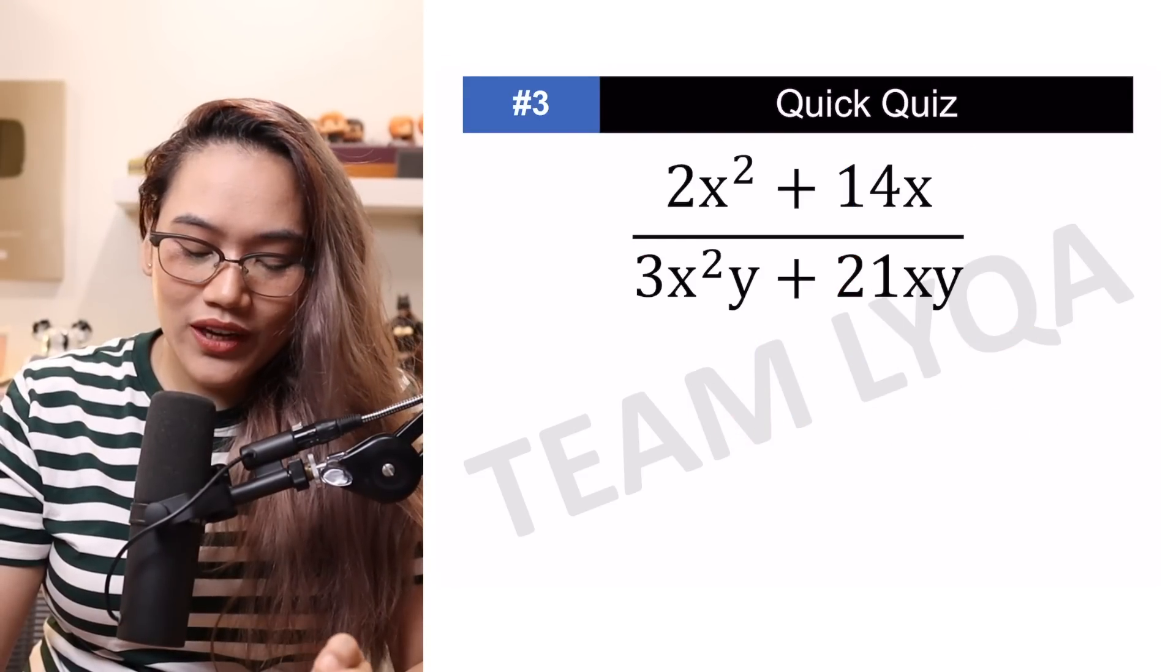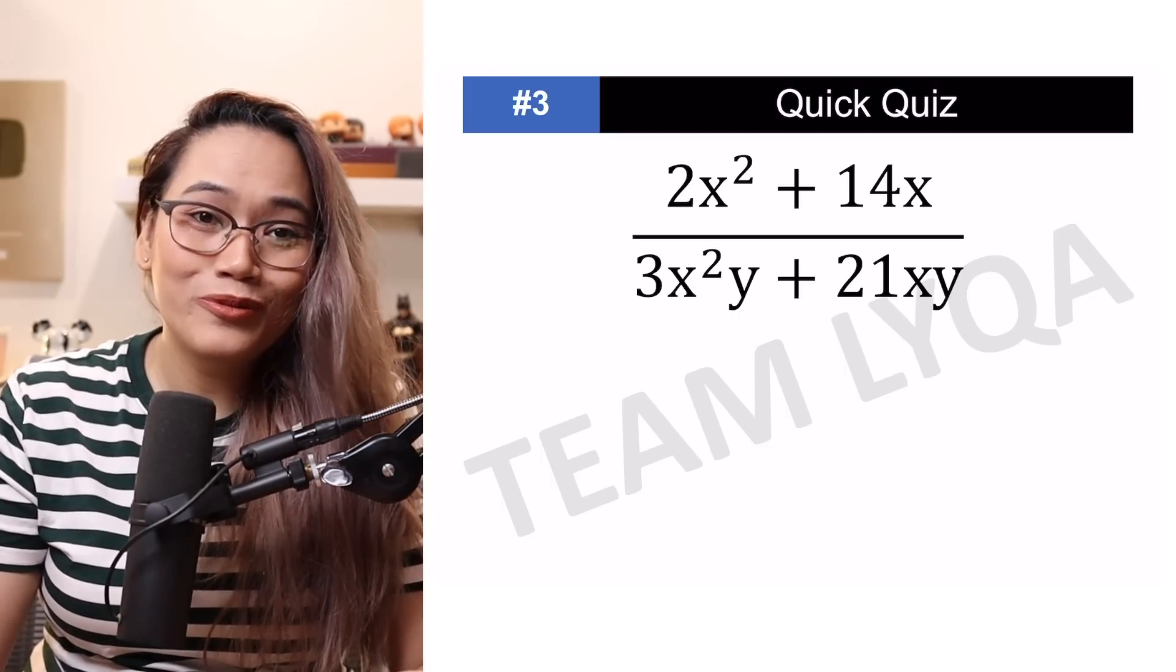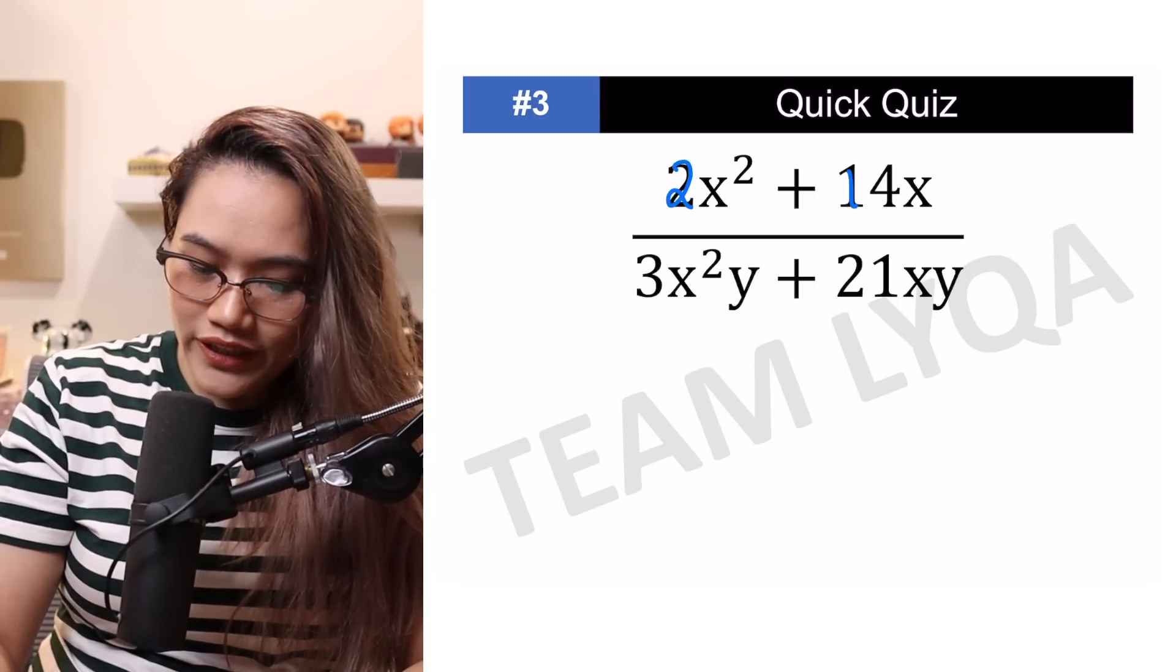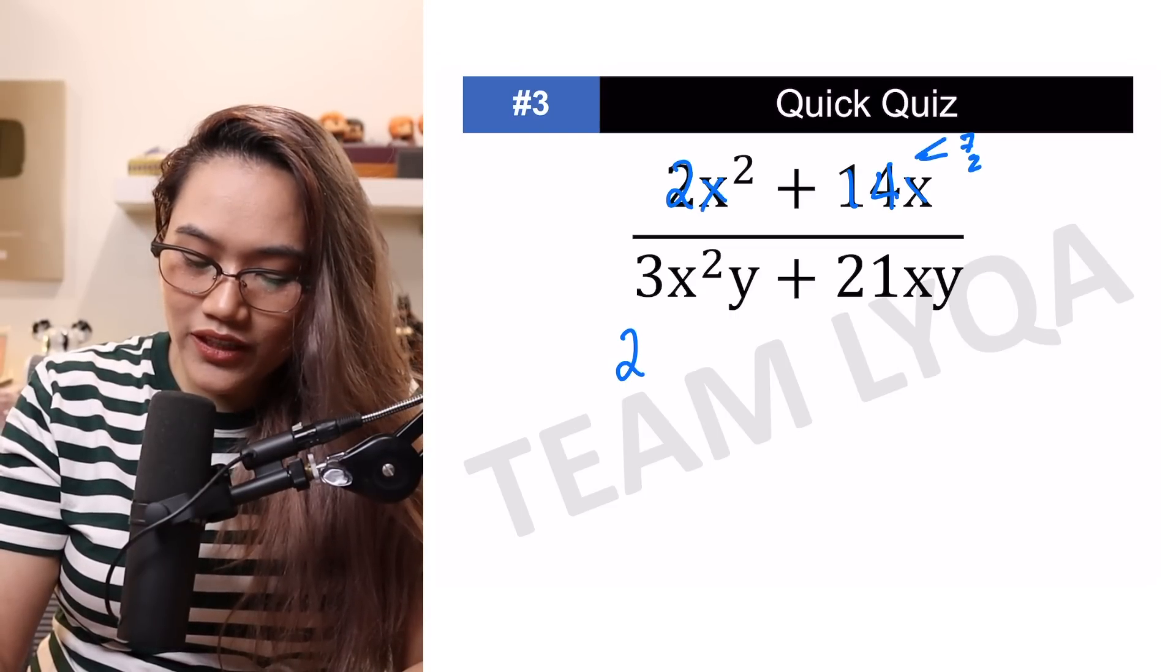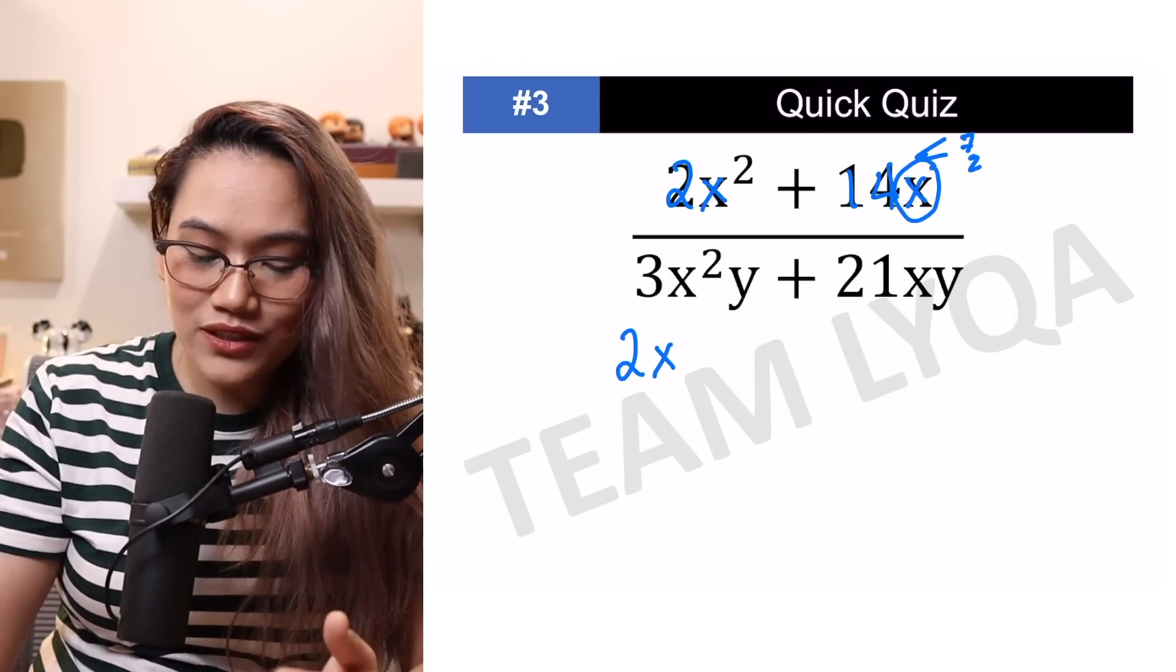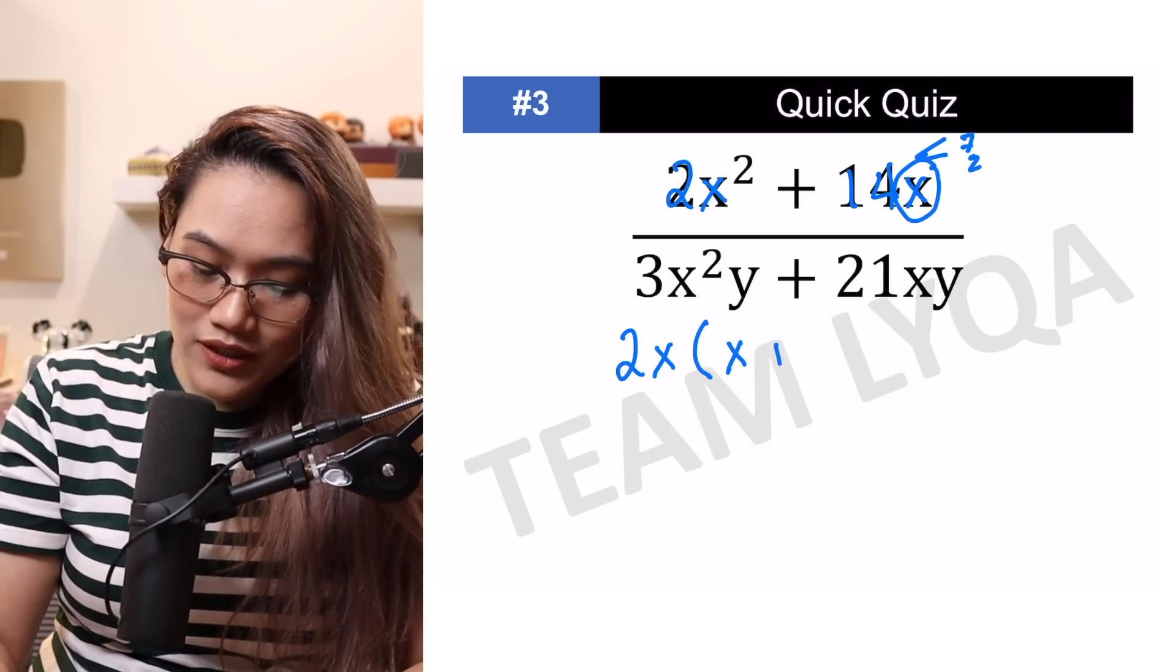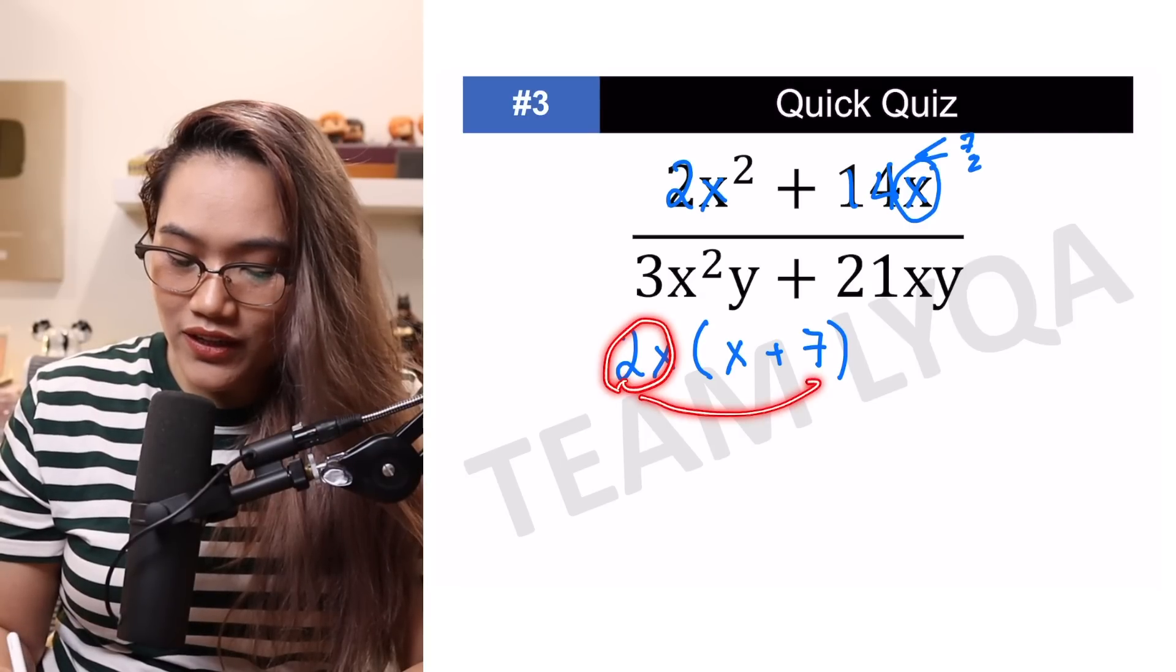Next, itaas natin yung level ng difficulty. Here, you have 2x squared plus 14x all over 3x squared y plus 21xy. Now, bakit may y? Why may y? Don't worry about that. It's going to be the same process na ginawa natin kanina. And of course, we're still going to apply yung mga concepts na natutunan natin doon sa part 1. Sa taas muna tayo, 2 and 14. Ang 14 is 7 times 2, which means pwede kong ilabas yung 2 rito. Yung x naman, may x dito, may x din dito. At dahil isa lang yung nasa right side, mas marami yung 2 sa 1, isang x lang din ang ilalabas ko. Now that I have that, anong kailangan ko i-multiply sa 2x para maging 2x squared? That would be x. Anong kailangan ko i-multiply sa 2x para maging 14x? That would be positive 7.